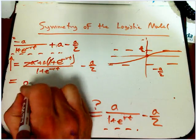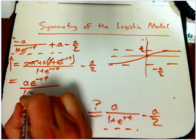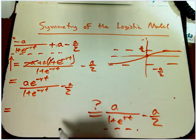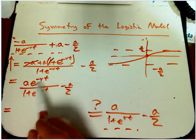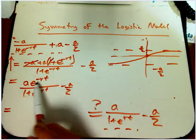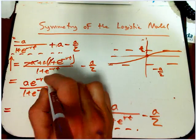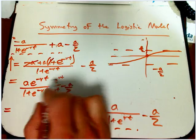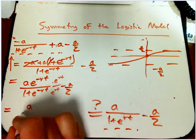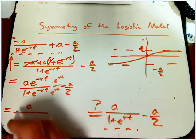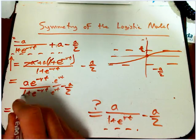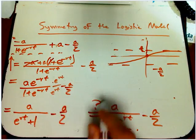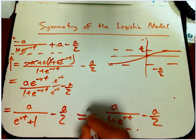So I get an a, e to the minus rt, over 1 plus e to the minus rt, minus a over 2. And now, I didn't want this, I don't want this on the top, so I'm going to multiply top and bottom of this fraction, times e to the rt. That's just 1 over this guy. These guys are going to cancel. So you're going to get a over e to the rt, for e to the rt plus 1, or times 1, and then e to the rt times e to the minus rt, and then the minus a over 2 is still there, and indeed, it equals that guy.